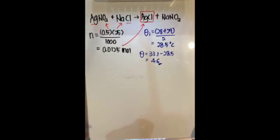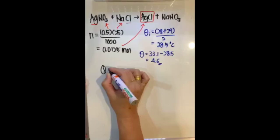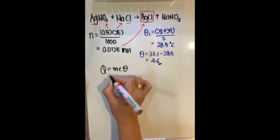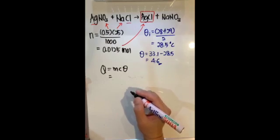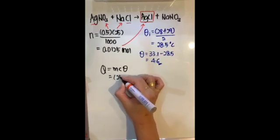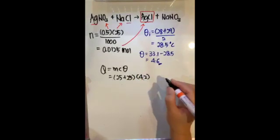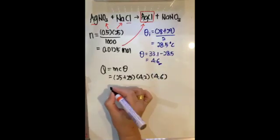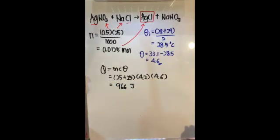Next, find the heat change using Q = mcΔT. The mass m is the total mass from the combined volume of both solutions. Since 1 cm³ ≈ 1 g, the total volume is 25 + 25 = 50 cm³, giving a mass of 50 g. With c = 4.2 and ΔT = 4.6, we get Q = 50 × 4.2 × 4.6 = 966 J.